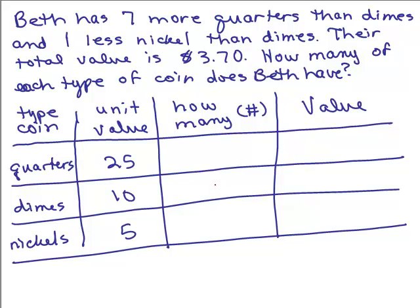Let's let the number of dimes be X. Remember you could use any letter you'd like. So if I've got X dimes, how many quarters would I have? She has seven more quarters than she has dimes. So the number of dimes is X. She's got seven more so that becomes X plus seven.